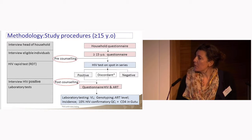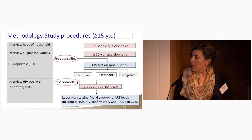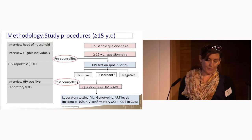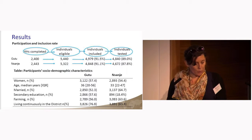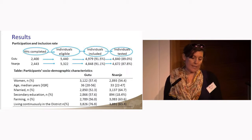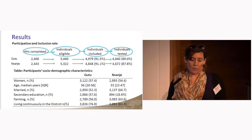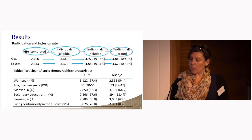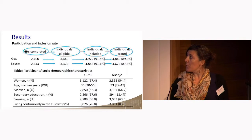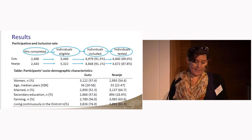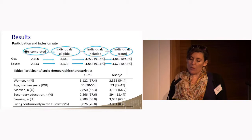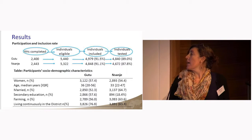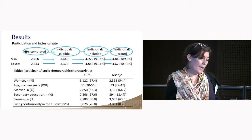For 10% of participants who tested positive, we conducted HIV confirmatory tests for quality control. In terms of participation and inclusion rates, in GU2, 2,400 households were completed and 5,440 individuals were eligible, with an overall inclusion rate of 89%. In NSANJ, 2,440 households were completed, 5,322 individuals were eligible, and the overall inclusion rate was 87.8%.